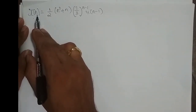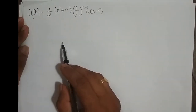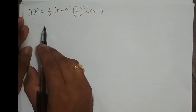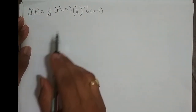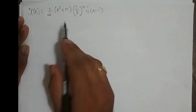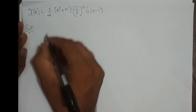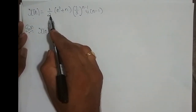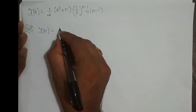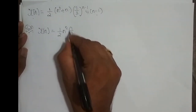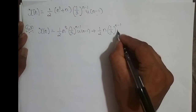We shall take up one more problem. The sequence is x of n equal to 1 by 2 into n squared plus n, into 1 by 3 power n minus 1, u of n minus 1. This looks complicated, but the previous two problems which I solved are actually the components of this sequence. I split this problem into 2, which is what I did in the previous two problems. So x of n equals 1 by 2 times n squared times 1 by 3 power n minus 1, u of n minus 1, plus 1 by 2 times n into 1 by 3 power n minus 1, u of n minus 1.